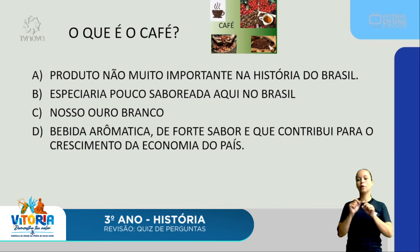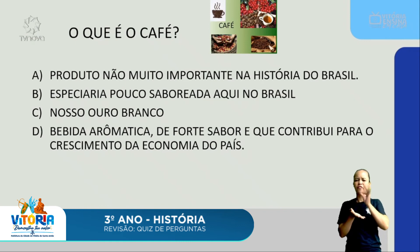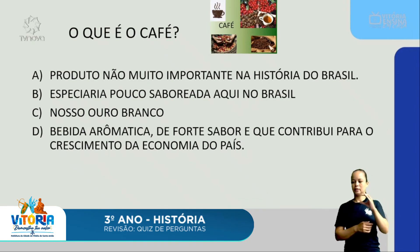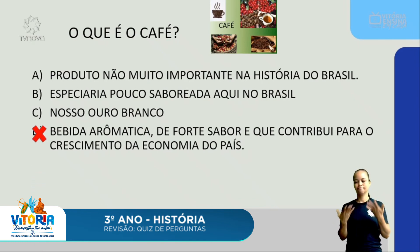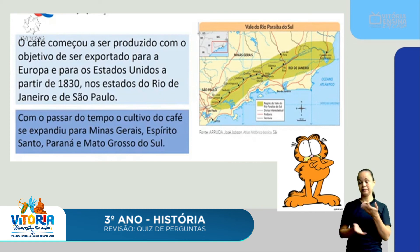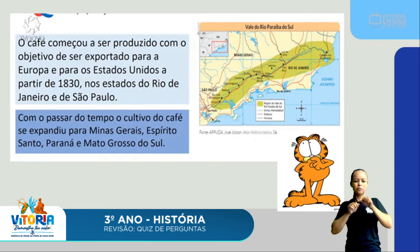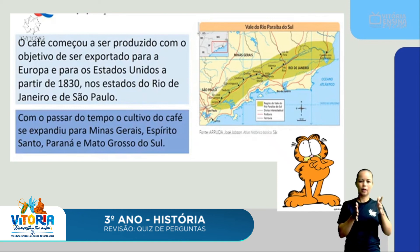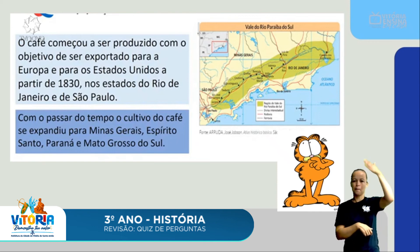Por último, temos o nosso querido café. Quem não gosta de café? O que é o café? Letra A: produto não muito importante na história do Brasil. Letra B: especiaria pouco saboreada. Letra C: o nosso ouro branco. Letra D: bebida aromática de forte sabor que contribuiu para o crescimento da economia do país. É a letra D! Aquele café quentinho com aquele cheiro maravilhoso teve uma contribuição enorme na economia. O café começou a ser produzido com objetivo de exportação para Europa e Estados Unidos, a partir de 1830, nos estados do Rio de Janeiro e São Paulo, expandindo-se depois para Minas Gerais, Espírito Santo, Paraná e Mato Grosso do Sul.